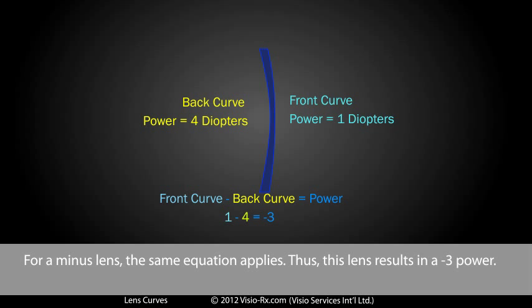For a minus lens, the same equation applies. Thus, this lens results in a minus 3 power.